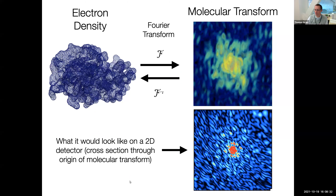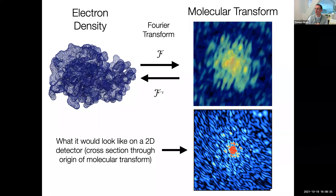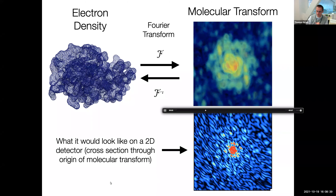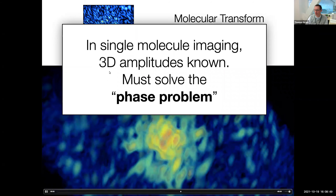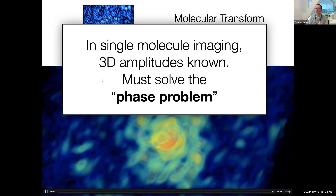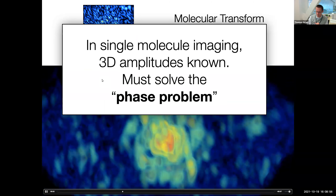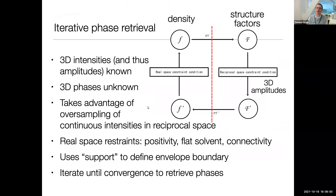For a single-molecule x-ray diffraction experiment, we would get intensities — 2D cross-sections as slices through this molecular transform — but because they're intensities we lose the phase information. We know the 3D amplitudes from the 3D intensity function, but we lose the phases. In iterative phase retrieval we divide the problem into two domains: real space, corresponding to electron density, and reciprocal space, where we have our structure factors. We start with known 3D amplitudes and random phases, calculate an inverse Fourier transform, and get an initial noisy electron density.